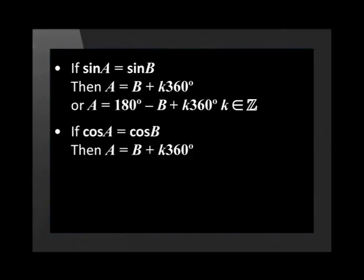If cos a is equal to cos b, then a equals b plus k times 360 degrees, or a is equal to negative b plus k times 360 degrees.